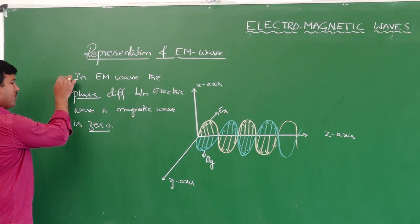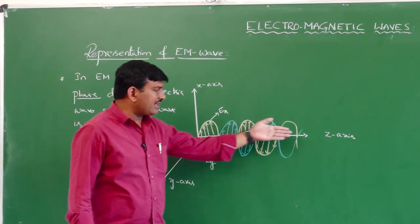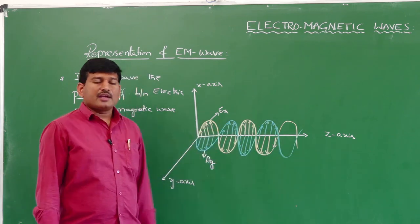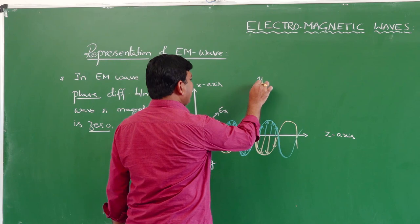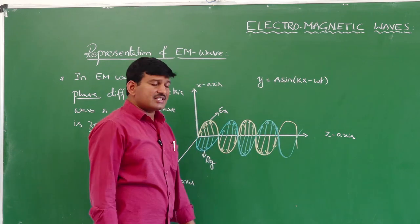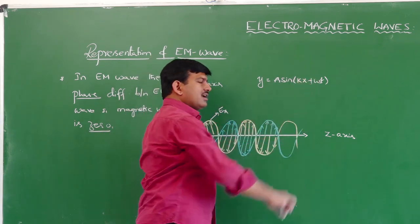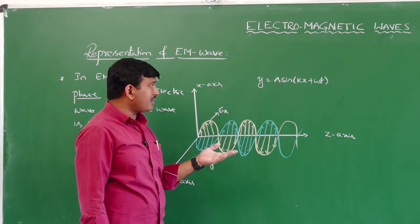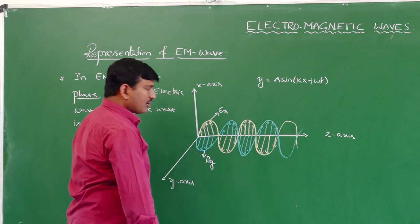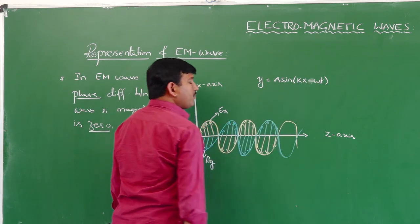How to represent this electromagnetic wave mathematically? The wave propagates along the positive z-axis. In first year we studied that the displacement of a sinusoidal wave is y = A sin(kx − ωt), which travels along the positive x-direction. Here, the minus sign indicates positive x-direction; a plus sign indicates negative x-direction. If we replace x with z, the wave propagates along the z-direction; a negative sign means positive z-direction.